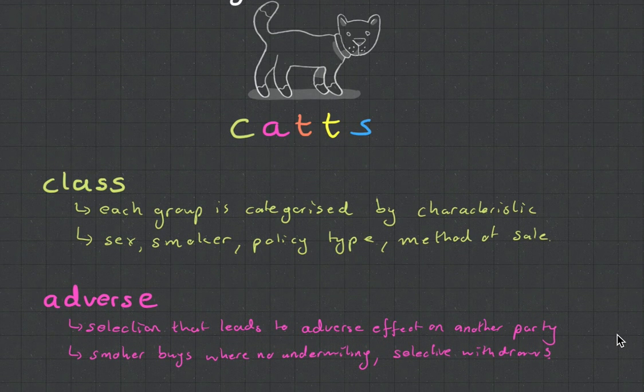Then there is adverse selection. Adverse selection is selection that leads to an adverse, which is a bad or a negative effect on another party. So, the classic example is there's two life insurance companies. The one, you pay a 15 rand premium if you're a smoker and a 10 rand premium if you're not. And the other insurance company charges a 12 rand 50 premium for everyone. Okay. What's going to happen?